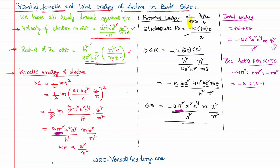The key points to understand are: total energy is negative, potential energy is also negative, and kinetic energy is positive. All three energies — potential, kinetic, and total — are directly proportional to z²/n², where z is the atomic number and n is the principal quantum number. Thank you for watching; keep coming back for more video lessons.